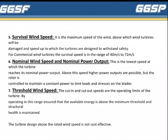For commercial wind turbines, the survival speed is in the range of 40 m/s to 72 m/s. Sixth is Nominal Wind Speed and Nominal Power Output — this is the lowest speed at which the turbine reaches its nominal power output.